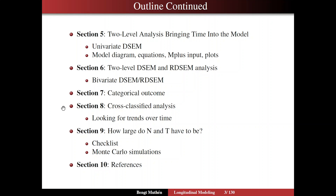In section eight, I look at cross-classified analysis as the last step in the DSEM analysis sequence — cross-classified DSEM, where we take a look at trends over time. I'm not going to go deep into that topic; I'm saving that for a later web talk. In section nine, I discuss how large the sample size and number of time points have to be. First, I do a simple checklist of suggestions, and then I also propose that you might want to do your own Monte Carlo simulation to answer the question about N and T. I show Monte Carlo input for both two-level and cross-classified DSEM.